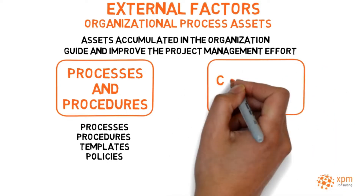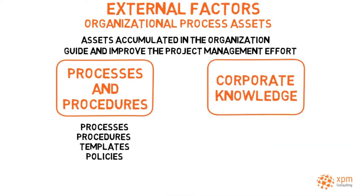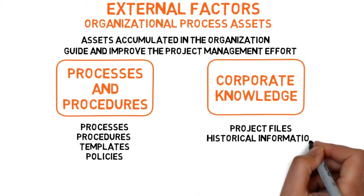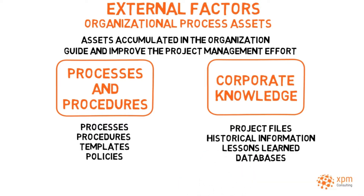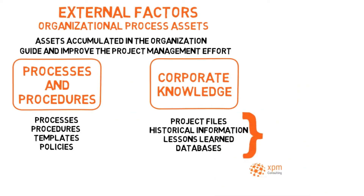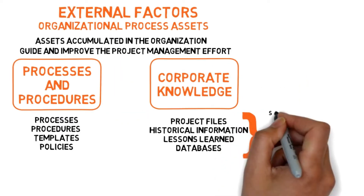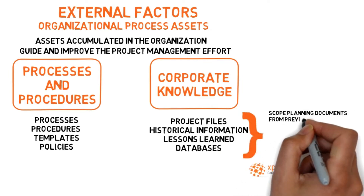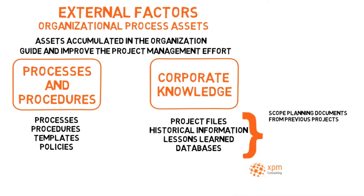Organizational process assets can also include corporate knowledge such as project files, historical information, lessons learned, and databases. Typical examples of historical information or historical data are scope planning documents from previous projects, such as a scope statement, a work breakdown structure, and a WBS dictionary.